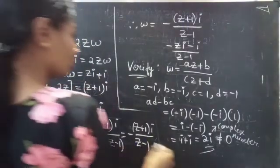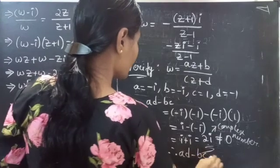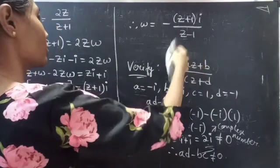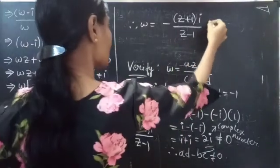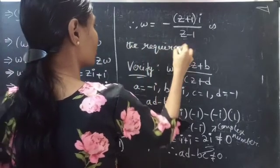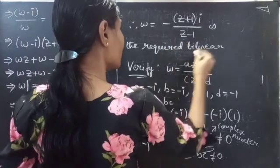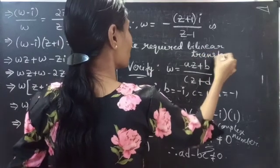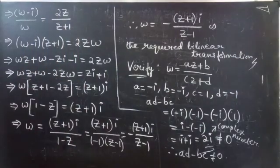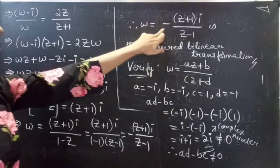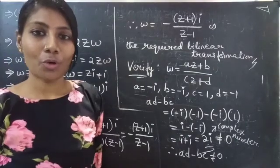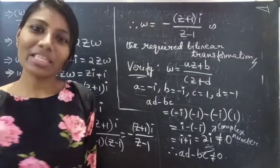Therefore, AD minus BC is not equal to 0, confirming that our transformation is the required bilinear transformation. The bilinear transformation is ω = −i(z + 1)/(z − 1). We have seen a problem on bilinear transformation. Hope you understand. We will see you in the next video. Bye-bye.